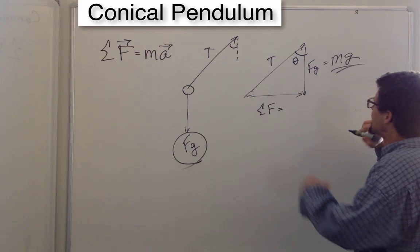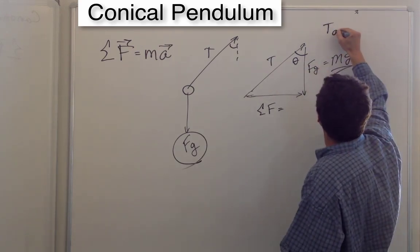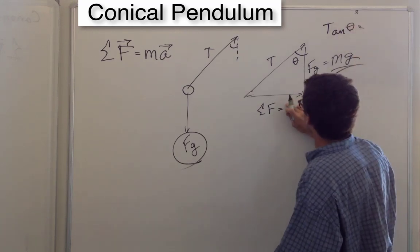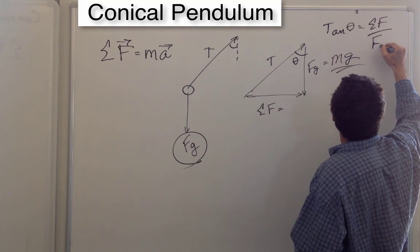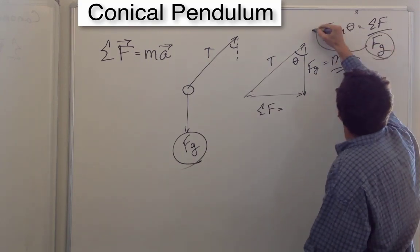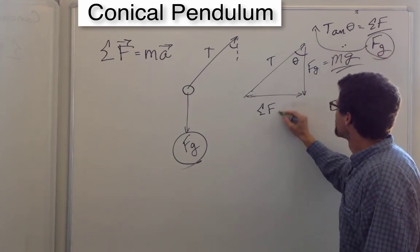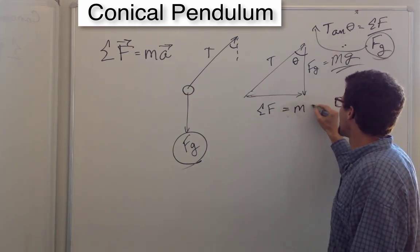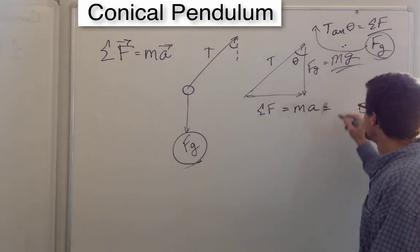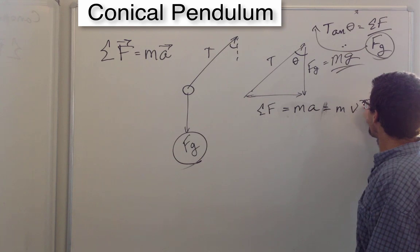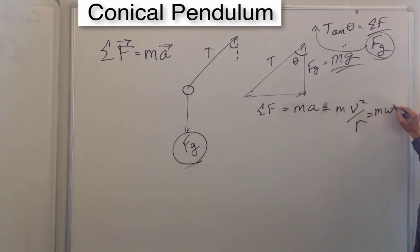And I can say, oh yeah, tangent of theta, I just go to tangent of theta, is equal to the vector sum of the forces divided by the force of gravity. And so this baby comes over here. And now I know what the vector sum of the forces are. Then I can just take that number, the vector sum of the forces, and set it equal to ma. And for that rotating canonical pendulum, that tether ball, that's going to be mv squared divided by r, or m omega squared r.